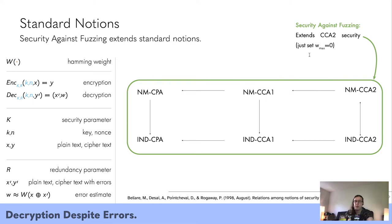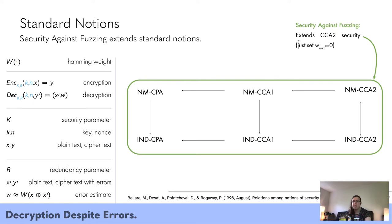Security against fuzzing basically just extends CCA2 security. This is equivalent to CCA2 security if we impose a maximum weight of zero — basically equivalent to normal authenticated encryption. So security against fuzzing starts with authenticated encryption and adds this extra property.